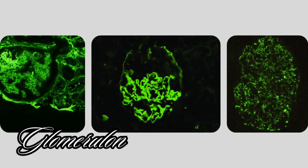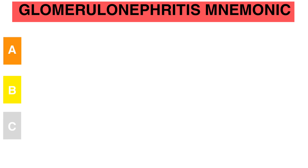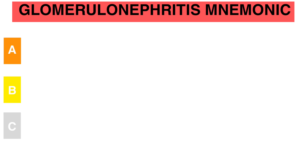Ever feel lost in the maze of glomerulonephritis? Let's simplify it using the ABC mnemonic so you can quickly identify each type by its key immunofluorescence pattern and clinical clues.